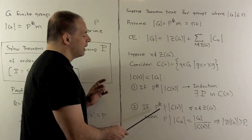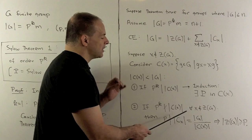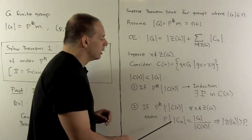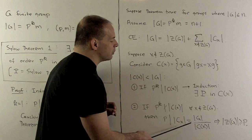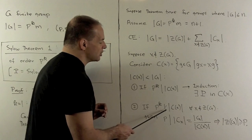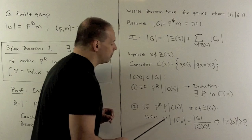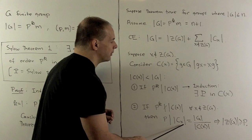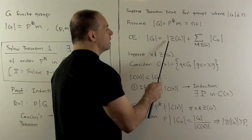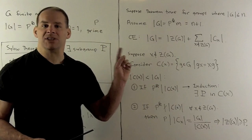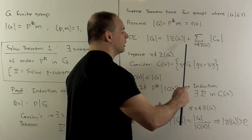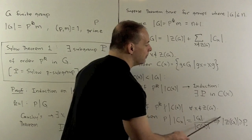Otherwise, we're going to have p^k dividing no centralizer for these elements not in the center. If we use the cardinality formula for the number of elements in a conjugacy class — that's going to say the number of elements in the conjugacy class of x equals the order of the group divided by the order of the centralizer of x — since p^k does not divide the centralizer, there's going to be a factor of p left, so p divides the order of these conjugacy classes. Now if we look at the class equation, p divides all of these terms and p divides the order of G, so p must divide the order of the center. The center has at least the identity element, so the order of the center is greater than or equal to p.